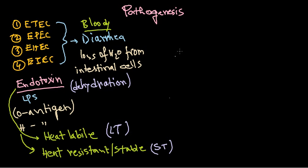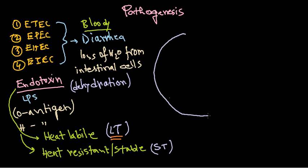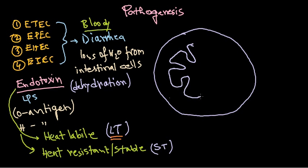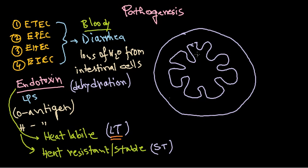In this video we are going to focus specifically on the LT type of toxin and see its mode of activity. Since diarrhea is a massive loss of water from the intestinal cells, let me draw the intestinal lining here in cross-section. These are the villi coming out — this is the intestinal lining — and these are the intestinal cells arranged along the villi.